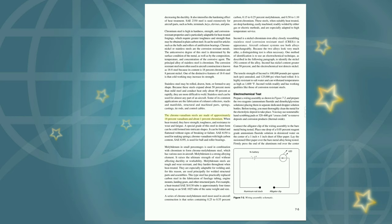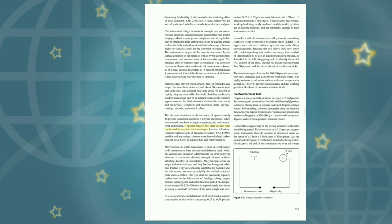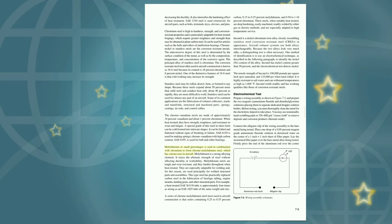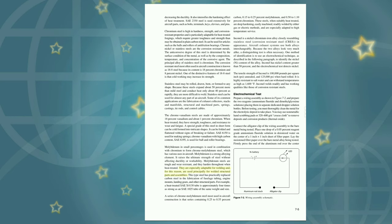Chrome-vanadium steels are made of approximately 18% vanadium and about 1% chromium. When heat treated, they have strength, toughness, and resistance to wear and fatigue. A special grade in sheet form can be cold formed into intricate shapes. C-6150 is used for making springs; chrome vanadium with high carbon content C-6195 is used for ball and roller bearings. Molybdenum in small percentages is used in combination with chromium to form chromolybdenum steel. Molybdenum raises the ultimate strength of steel without affecting ductility or workability. Molybdenum steels are tough, wear resistant, and harden throughout when heat treated. They are especially adaptable for welding and are used principally for welded structural parts and assemblies. This type of steel has practically replaced carbon steel in the fabrication of fuselage tubing, engine mounts, landing gears, and other structural parts. A heat-treated CX-4130 tube is approximately 4 times as strong as a C-1025 tube of the same weight and size.